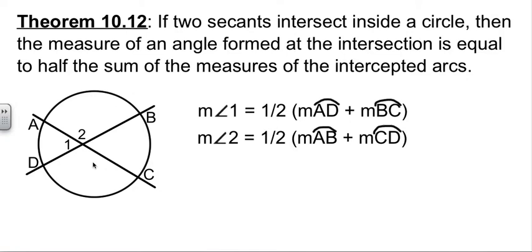Each of those two angles, angle 1 and angle 2, we can find based on the arcs that are made. So angle 1 is going to be equal to half the sum of its two arcs, AD and BC. Angle 2 is equal to half the sum of its two arcs, AB and CD.